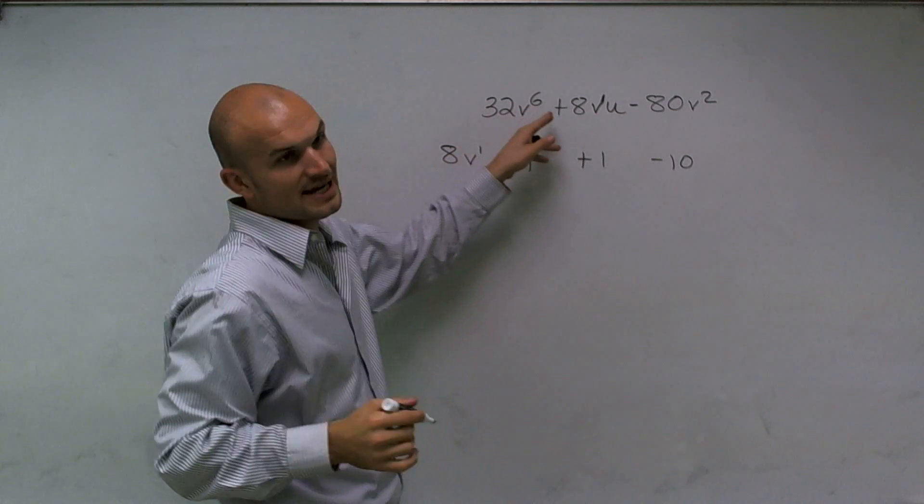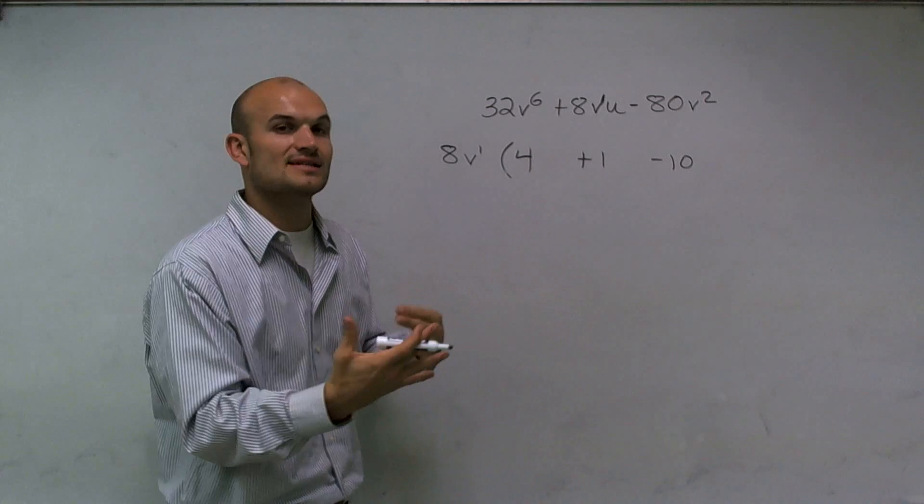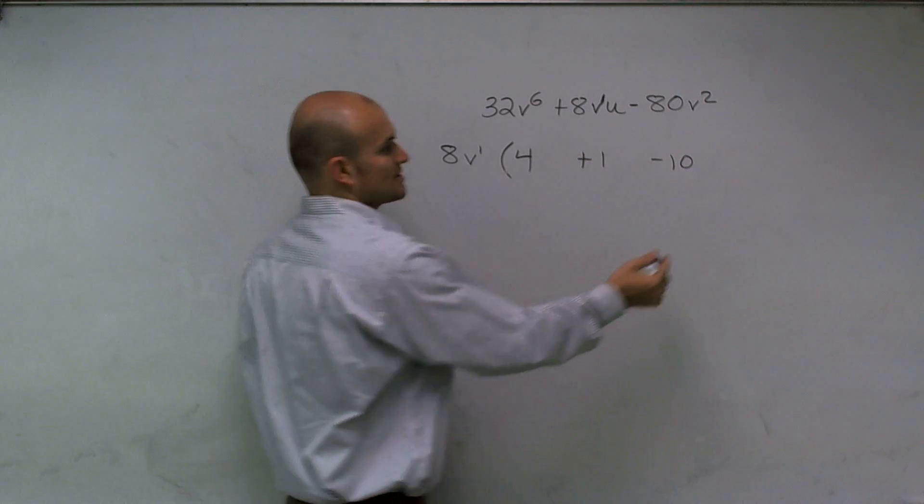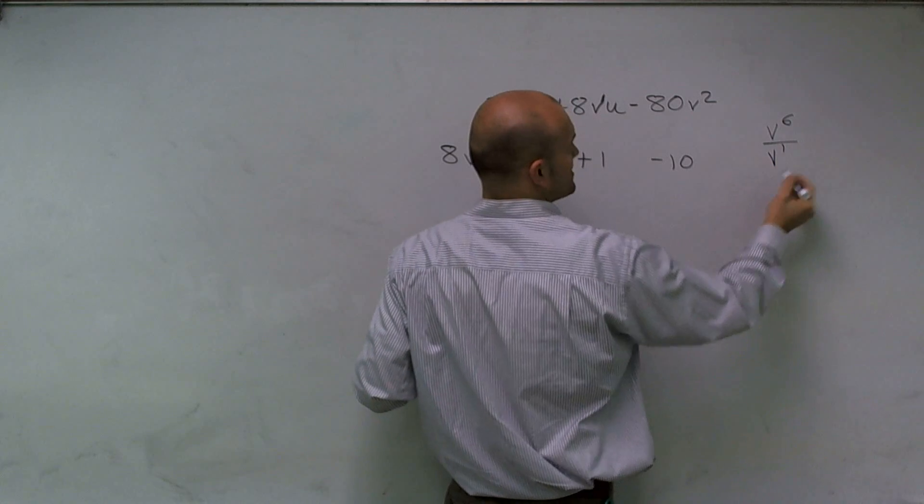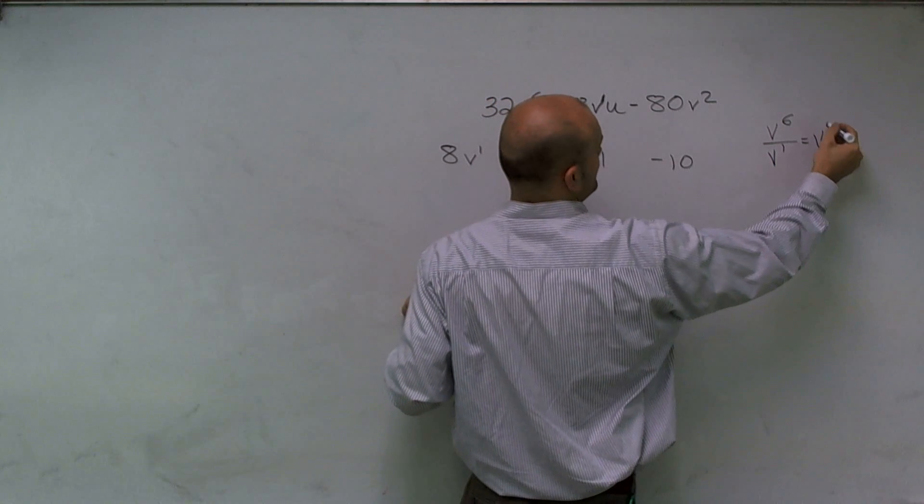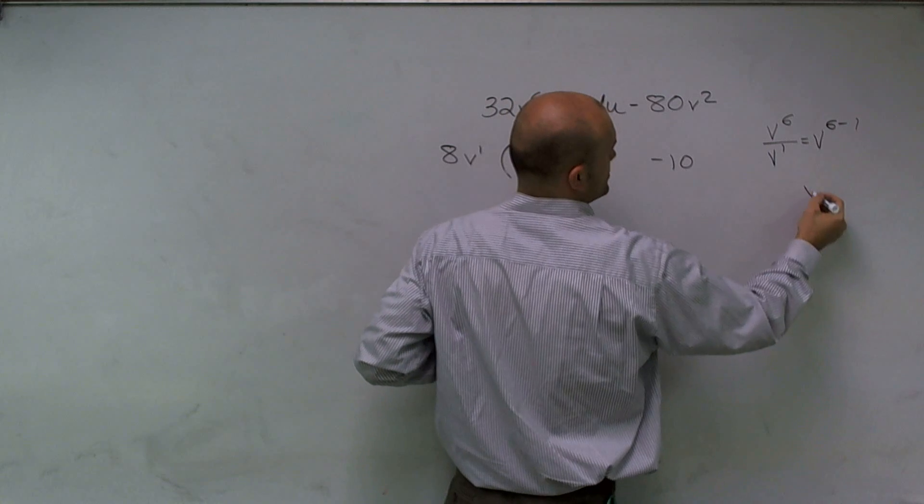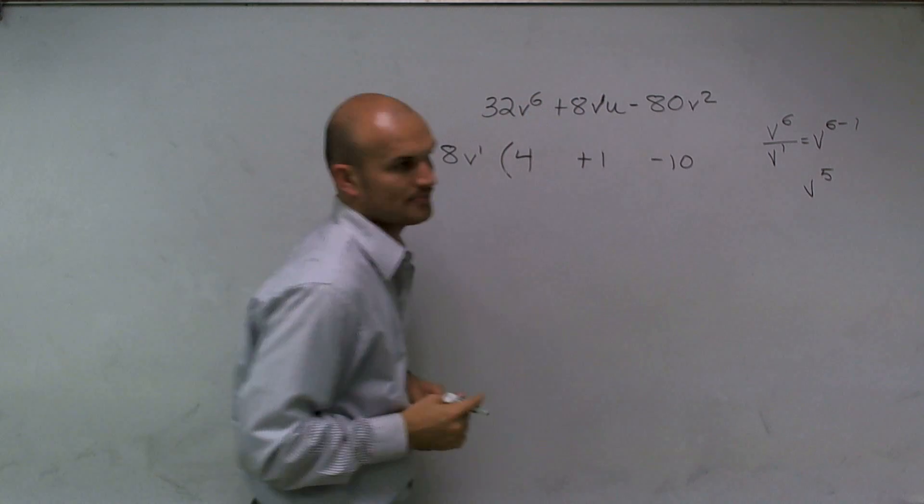So what I can do is if I factor out a v to the first power, what I'll have is v to the sixth divided by v to the first. And like I said, we're using our rules of exponents. So what I'm really doing is dividing. v to the sixth divided by v to the first is equal to v to the sixth minus 1, which equals v to the fifth.